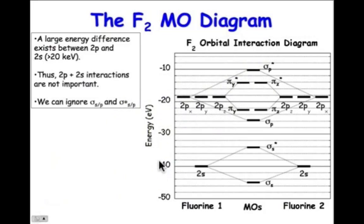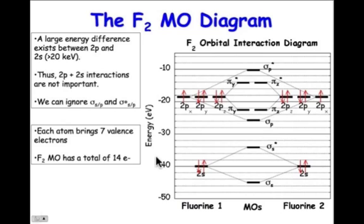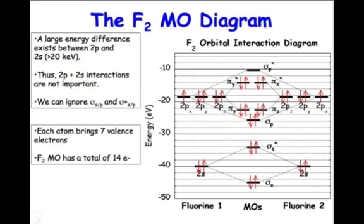By ignoring the sigma s/p combinations, we're left with those 8 molecular orbitals. Now, fluorine brings with it 7 valence electrons, and I've added electrons into the atomic orbitals, filling them up from lowest. Taking those 14 electrons altogether, I use Hund's rule and fill the new molecular orbitals with electrons from the atomic orbitals they're derived from, with electrons filling from the bottom upward. I'm left with the diagram that's shown here. Remember, 2 electrons occupy each one of the levels.